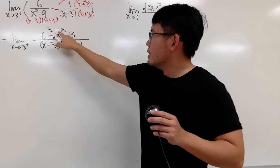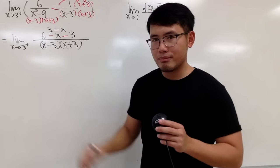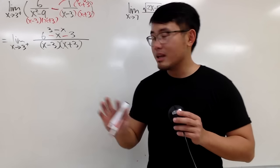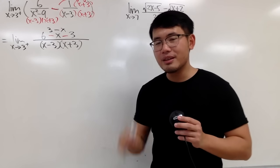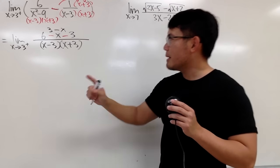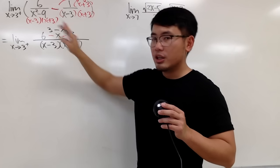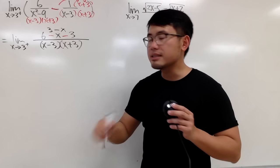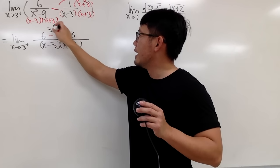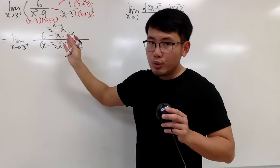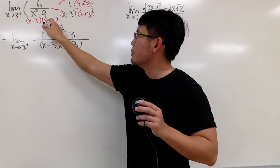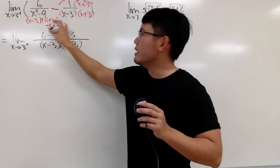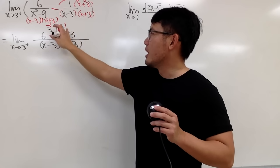And you might be tempted to just cancel this one and that one. But we cannot do that because the order of subtraction does matter. It's not that bad, though, because right here, if you just change the 3 minus x into x minus 3, all you have to do here is just put parentheses and negate the result. Then negate the result.